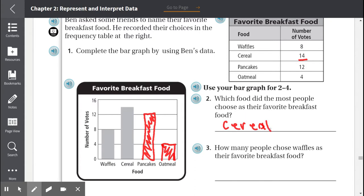Number 3, how many people chose waffles as their favorite breakfast food? So let's find waffles, and waffles has 8, and if we check our bar graph, waffles is at 8. So 8 people.